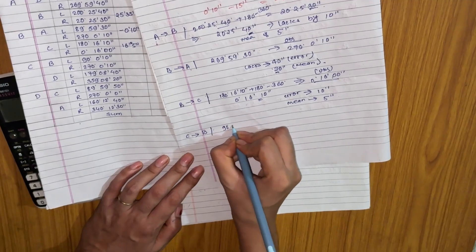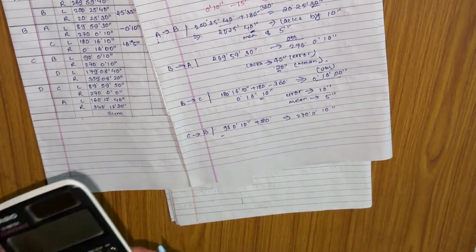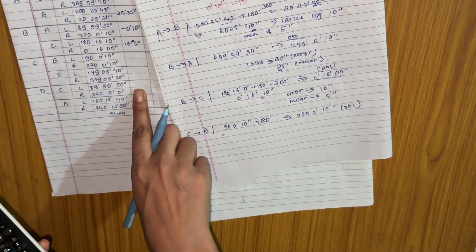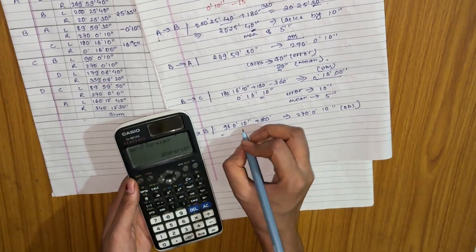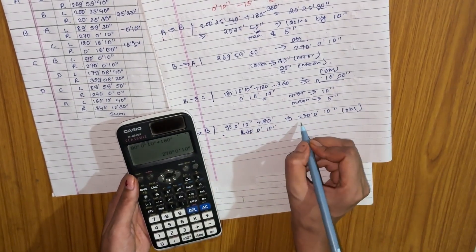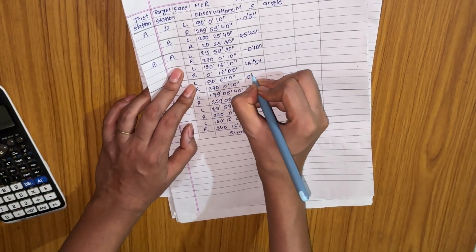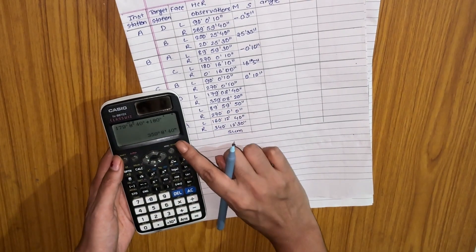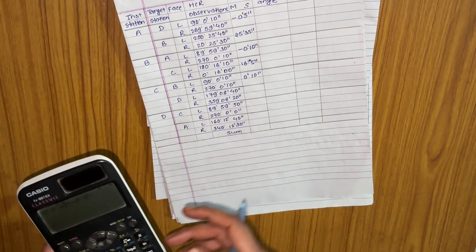For C to B, the left angle is 90°00'10". Adding 180° gives 270°00'10", which matches the observed angle exactly — there is no error. The mean of 0 minutes and 10 seconds is simply 0 minutes and 10 seconds. For the next observation, 179°08'40" plus 180° equals 359°08'40", which is greater than the observed angle. The error is 20 seconds, the mean is 10 seconds, giving 8 minutes and 30 seconds.